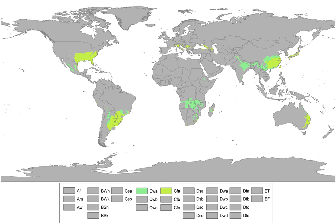In East and Southeast Asia, this climate type is found in the southeastern quarter of mainland China from Hong Kong north to Nanjing, the northern half of Taiwan, northern Myanmar, northern Vietnam, north through southern and central Japan — Kyushu, Shikoku, and half of Honshu — and the extreme southern tip of South Korea around Busan. Cities near the equatorward boundary include Hong Kong, Hanoi, and Taipei, while Qingdao and Tokyo are near the northern boundary.